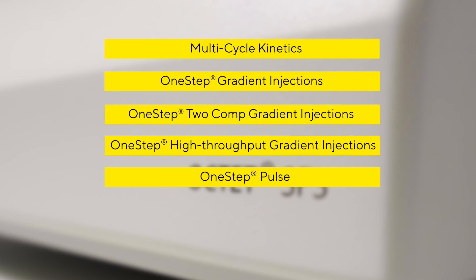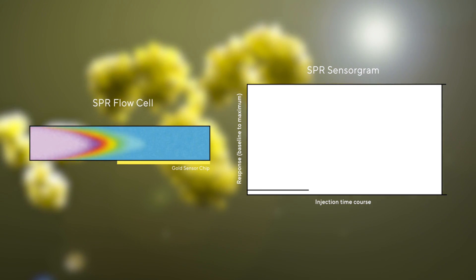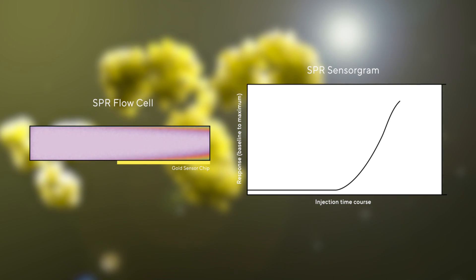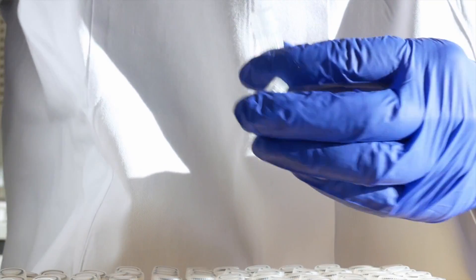1-step gradient injections are capable of creating an analyte gradient of at least 3 orders of magnitude. This is achieved by diffusing a single analyte concentration into a moving stream of buffer, which removes the need to create multiple dilution series.